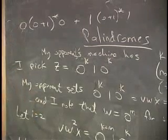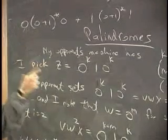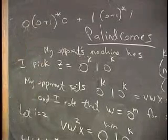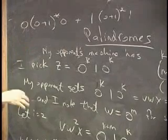But if I want the first two symbols and the last two symbols to match, it looks like I'm going to need a union of four: zero, zero, anything, zero, zero. Zero, one, anything, one, zero. One, zero, anything, zero, one. One, one, anything, one, one.